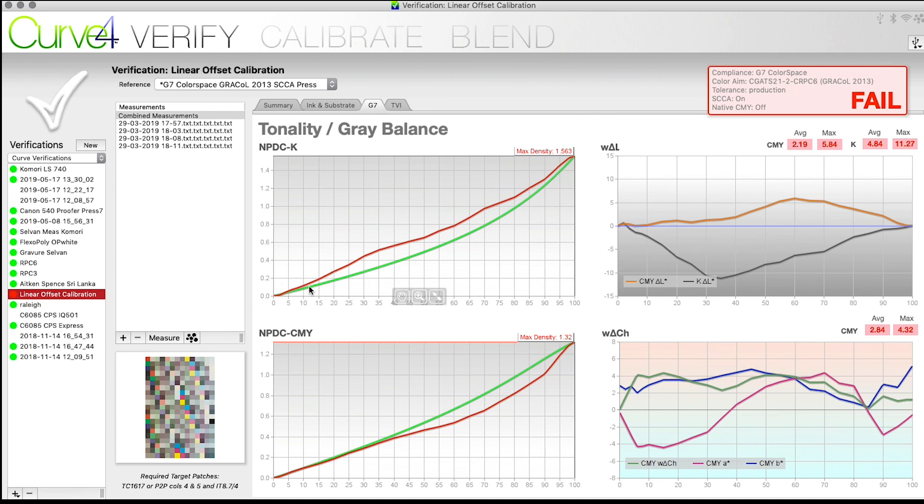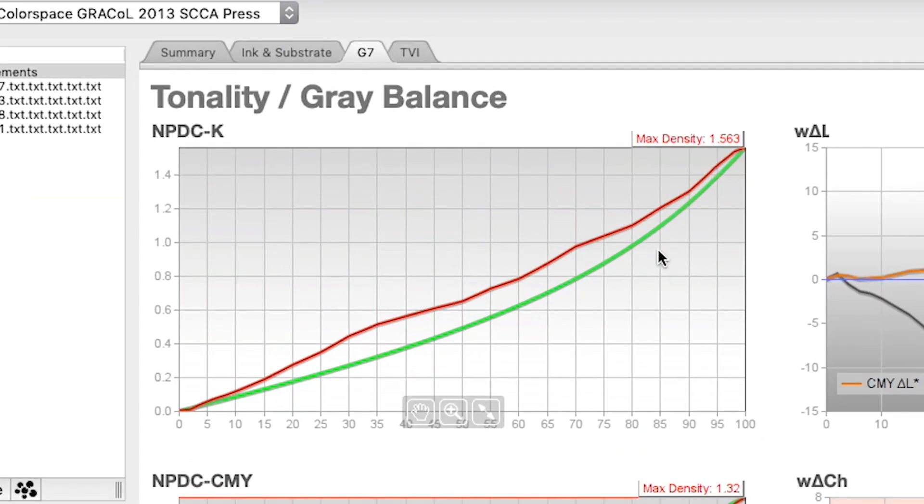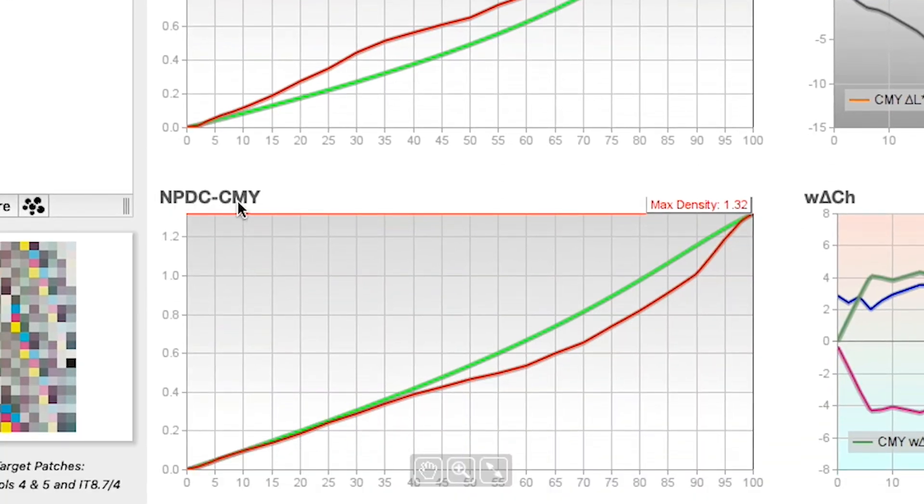Let's take a look at one that's not so perfect. You can see here that on the black, the red line is considerably higher than the green curve. That's an indication that that black is printing much too dark, it's heavier.